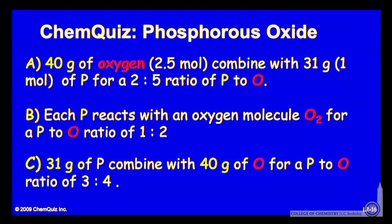Or option three: 31 grams of phosphorus combined with 40 grams of oxygen, so a 3 to 4 ratio. Think about those and make a selection.